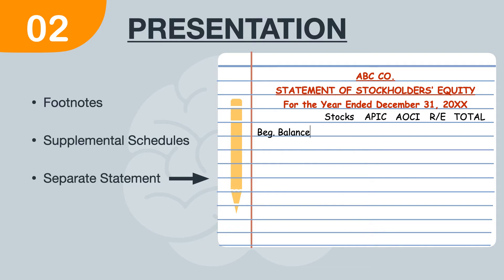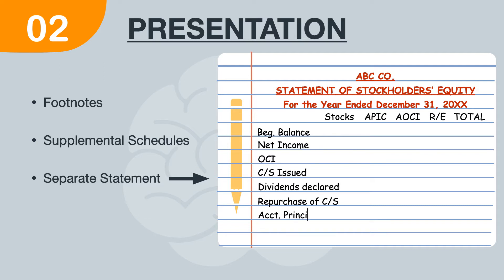And vertically is where we list all the components. So we have beginning balance, net income, OCI, common stock issued, dividends declared, repurchase of common stock, accounting principle changes, prior period adjustments, and then we have the ending balance.